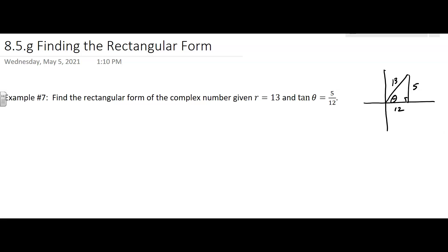Now that we have that, we're trying to find the rectangular form. We know r, and what else do we need to know? We need to know the cosine of theta and the sine of theta. Let's write this out.